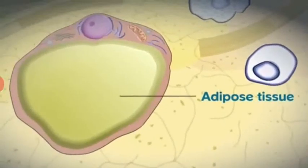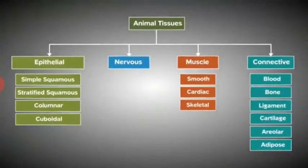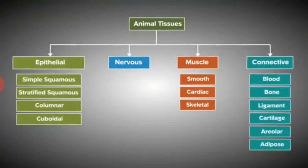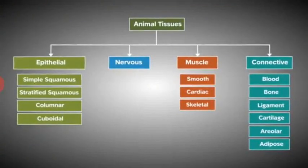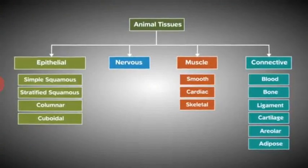Adipose tissues store fat molecules. In conclusion, we have seen and understood the types of animal tissues, their sub-classifications, and their functions. Things to remember.